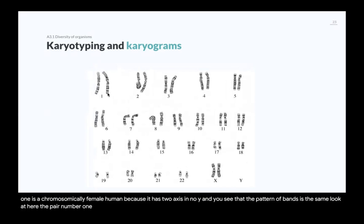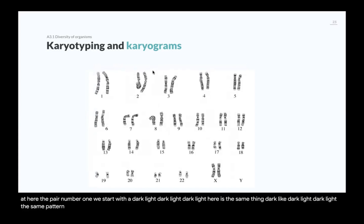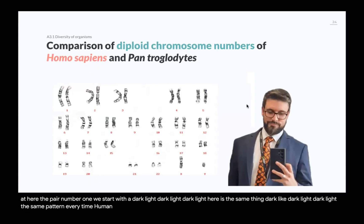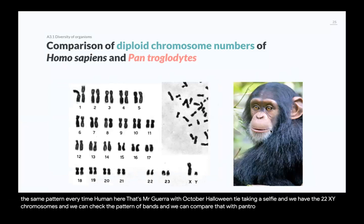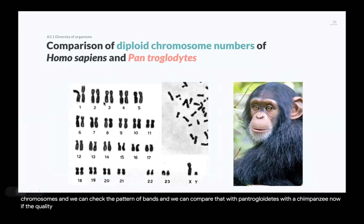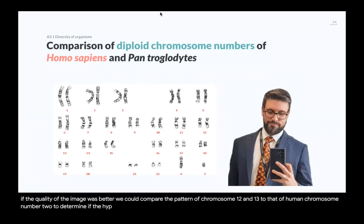The pattern of bands is the same for homologous pairs — dark, light, dark, light, dark, light — identical every time. We can compare this human karyogram with that of Pan troglodytes, the chimpanzee. If the image quality were better, we could compare the band patterns of chimpanzee chromosomes 12 and 13 with human chromosome 2 to determine whether the fusion hypothesis is plausible.